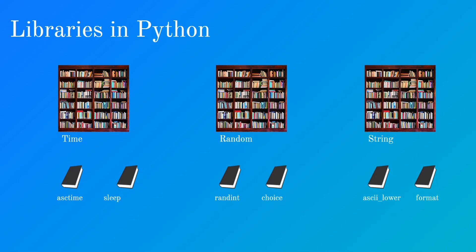Finally, the string library — which brings us back to strings — has a few helpful functions. ascii_lowercase gives you a string with all the lowercase letters. The format function is something we talked about last video, but in newer versions of Python they moved the dot format function to the basic Python library. Before Python 3.5 or 3.6, you had to use the string library's version. These are small libraries, but in the future you might use bookshelves ten or fifty times the size of these.